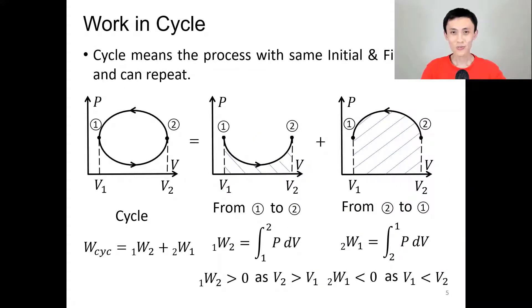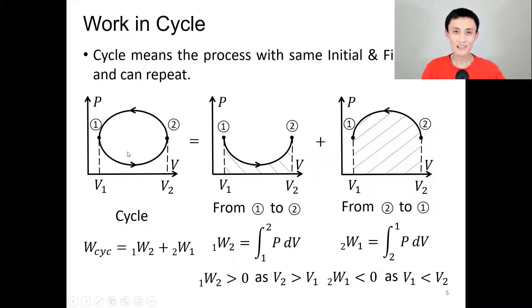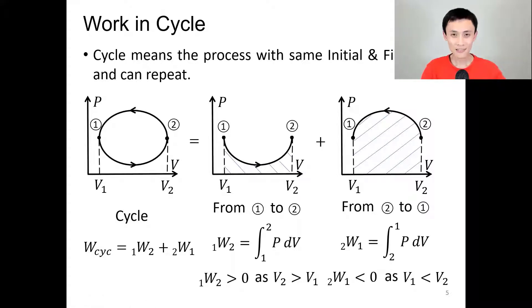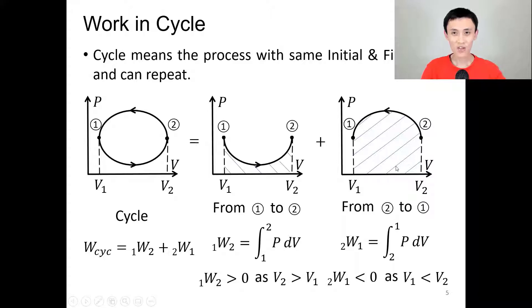In the future, we are going to learn several cycles. A cycle means multiple processes together that have the same initial and final state, and the whole thing can repeat. For example, this cycle has process A from state one to two, and process B from two back to one. For process A, volume increases so we expect positive work — the work is also the area under the curve. For process B, volume decreases so we expect negative work, and again the area under the curve represents that work.